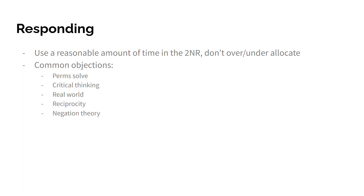The next objection is reciprocity. This argument is basically that the affirmative is conditionally as well — for instance, you can just kick case and go for 1AR theory or something. You can also kick advantages if you want to. Basically, the affirmative is able to do the same thing that negative conditionality grants the negative, which levels the disparity or the fairness skew.